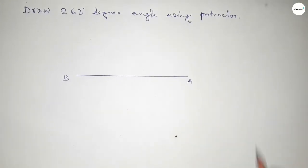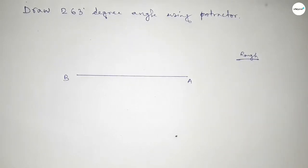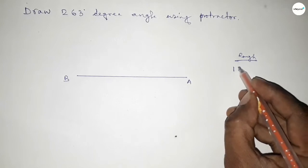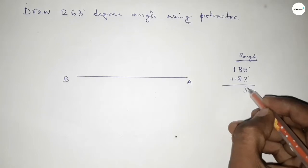Now roughly discussing here some conclusion: if you add 83-degree angle with 180 degrees, then we can get 263-degree angle.